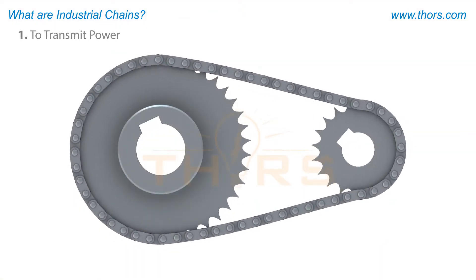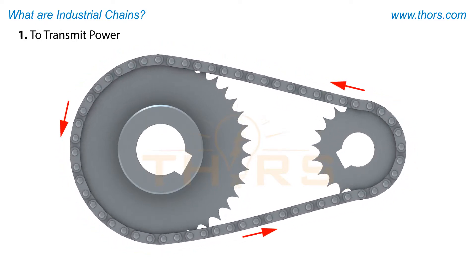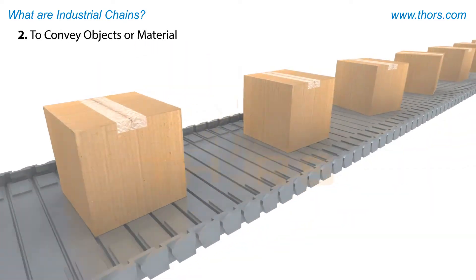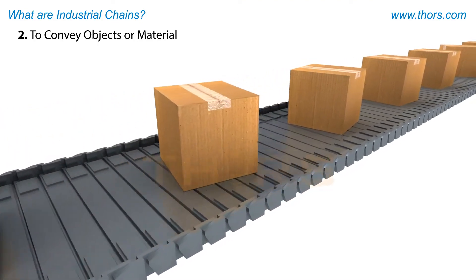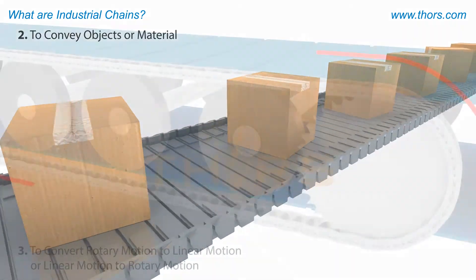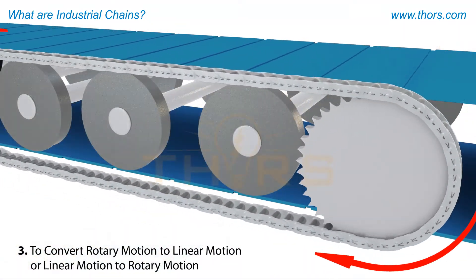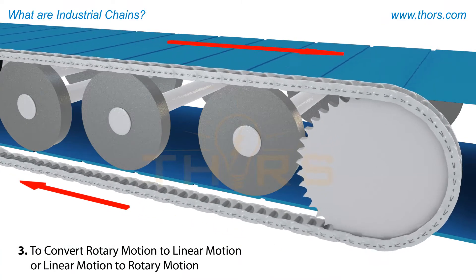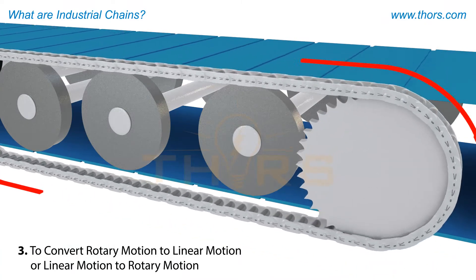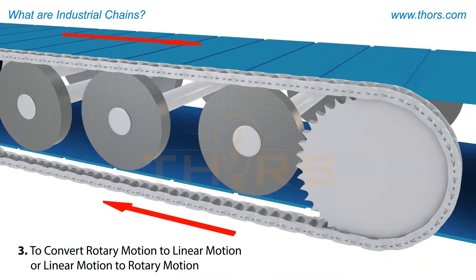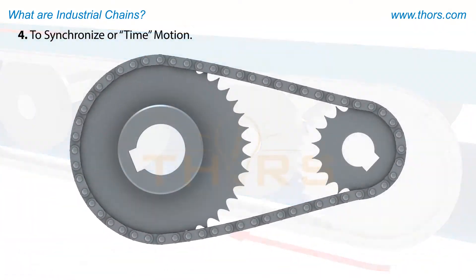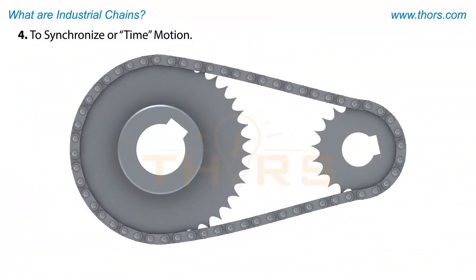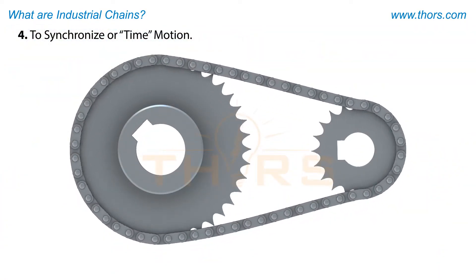One: to transmit power. Two: to convey objects or material. Three: to convert rotary motion to linear motion, or linear motion to rotary motion. And four: to synchronize or time motion.